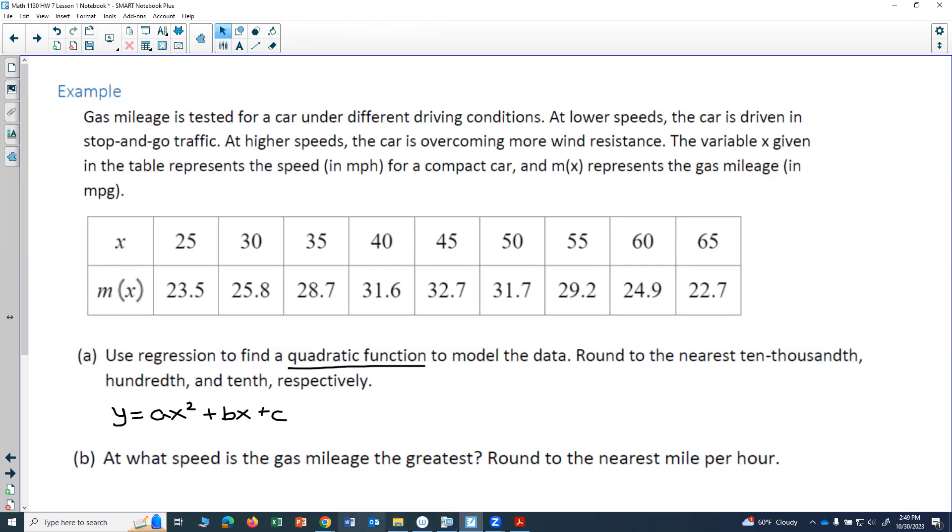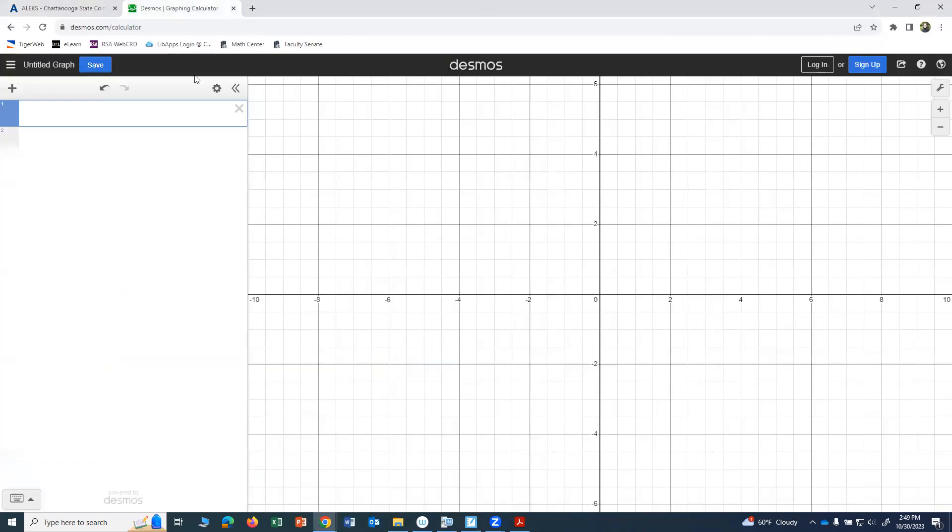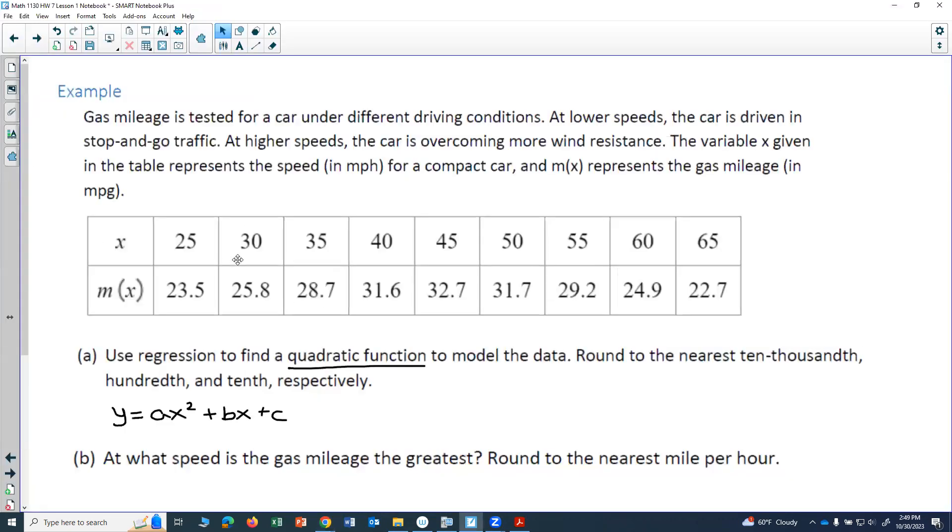So I'm going to go to desmos.com. I'll go to the plus in the upper left and insert a table. For my x column, I want to use the x values that were given in the table. So I had 25, 30, 35, 40, 45, 50, 55, 60, and 65. So those came from this table.